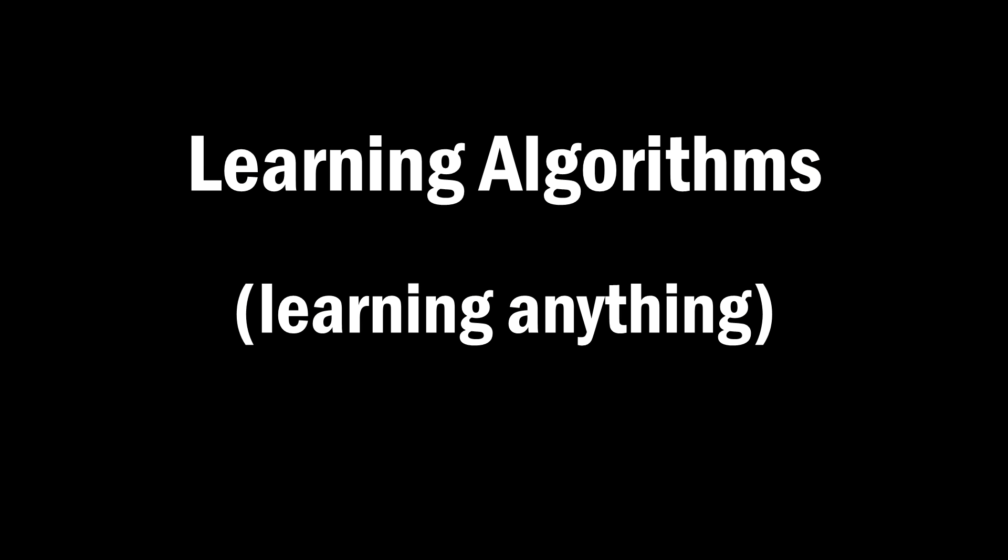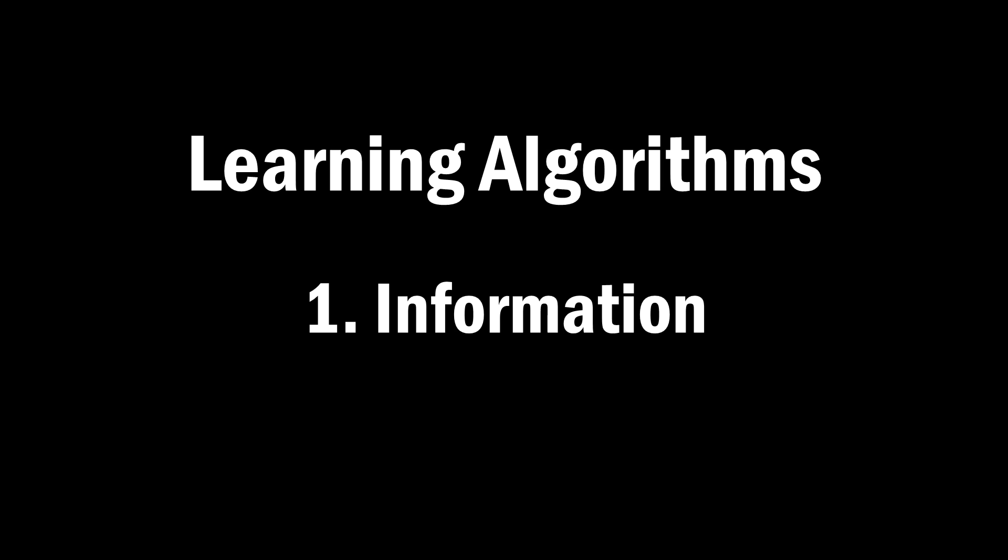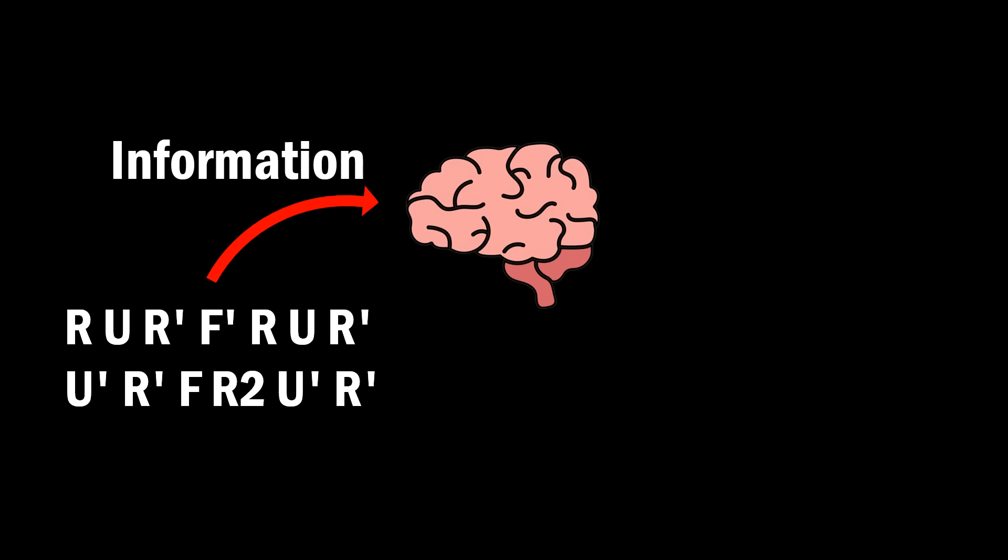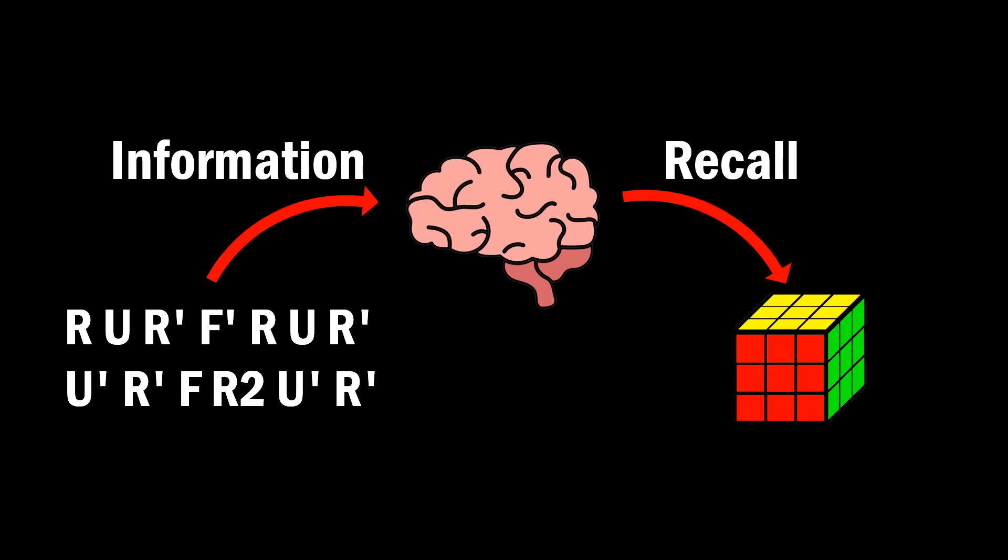Learning algorithms, or learning anything, is a matter of information and recall. If you're more of a beginner, you'll be focusing more on the information part or how to get an algorithm into your head. Recall is about retrieving that information from your head quickly.